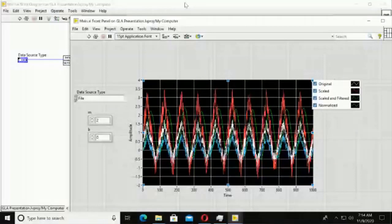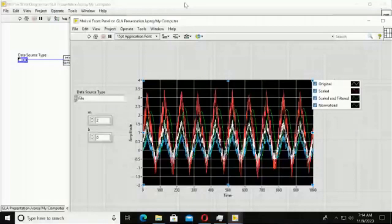Decorator use cases include: adding pre/post steps to test steps, such as switching relays before or after a step; handling multiple result-storage options like files or databases; encrypting and decrypting data for serial communications, or adding and verifying CRCs; and caching — storing previous inputs and outputs so that if the same inputs appear, the cached output is returned instead of recomputing. These are just a few real-world applications.